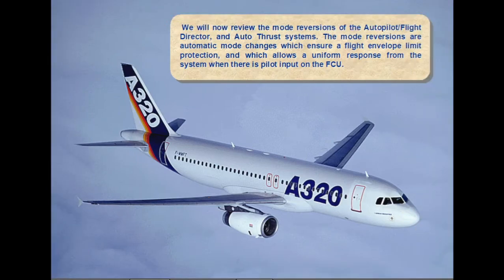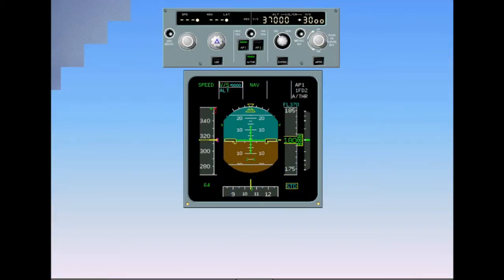We will now review the mode reversions of the autopilot flight director and autothrust systems. The mode reversions are automatic mode changes which ensure a flight envelope limit protection, and which allow a uniform response from the system when there is pilot input on the FCU. Let's review the flight envelope limit speed protection with the autopilot on.